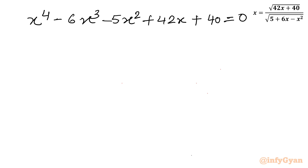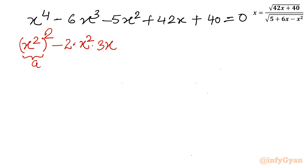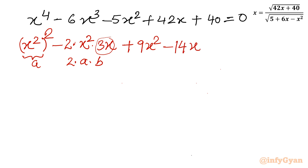Now I will use a perfect square method. We have x⁴, which we can write as (x²)². The term 6x³ can be written as 2 · x² · 3x, so this fits the form a² - 2ab with a = x² and b = 3x. To complete the square I need to add b² = 9x², and compensate by writing -14x², since 9 - 14 = -5. So the expression becomes (x²)² - 2·x²·3x + 9x² - 14x² + 42x + 40 = 0.